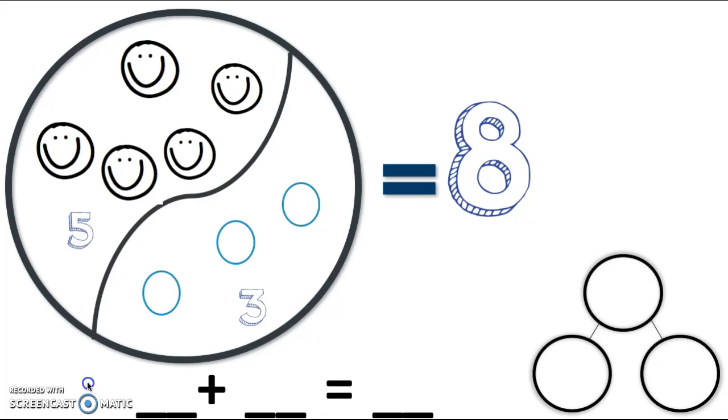So now I should be able to fill in my number sentence and my number bond. I could say five, because that's one of the parts, plus three, because that's the other part, equals the whole amount, which is, yep, you got it, eight. Perfecto. Let's go ahead and throw that into our number bond, our favorite math tool. Let's see. The two parts will go on the bottom. So that's five, and the other part is three, and then that big circle has the whole amount, which is, you know it, eight. Excellent job.